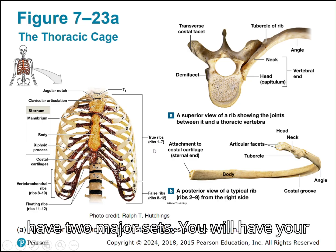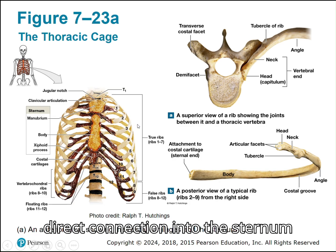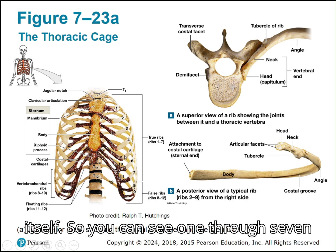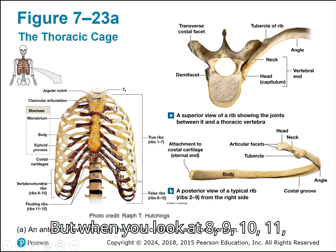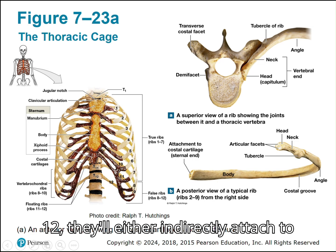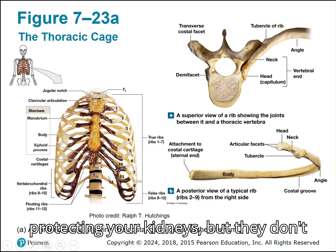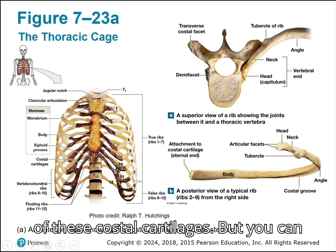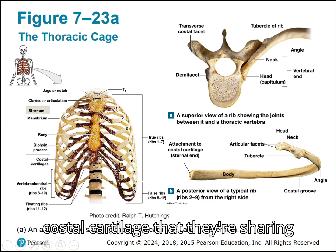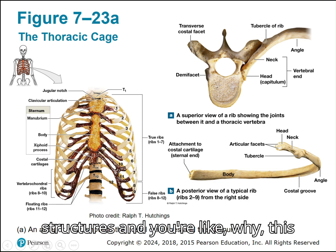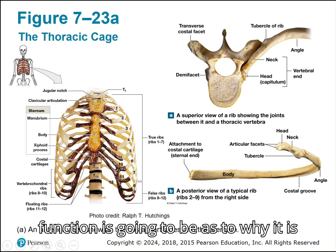Of your ribs, you have two major sets: true ribs and false ribs. True ribs — ribs 1 through 7 — have a direct connection into the sternum. Ribs 8 through 12 are false ribs, which either indirectly attach to the sternum or not at all. Ribs 11 and 12 are on the posterior side, protecting the kidneys but not attaching to any costal cartilage. Ribs 8 and 9 come around and share one costal cartilage. When looking at these bony structures and their unusual shapes, think about what they must attach to and what function they serve.